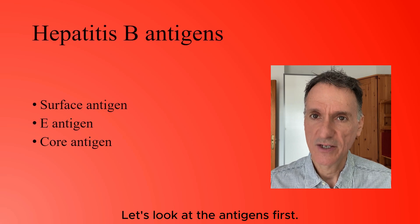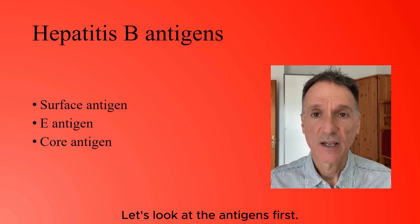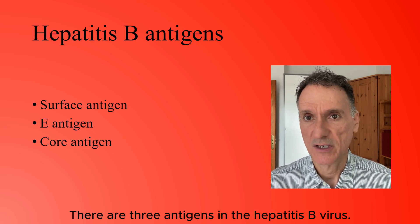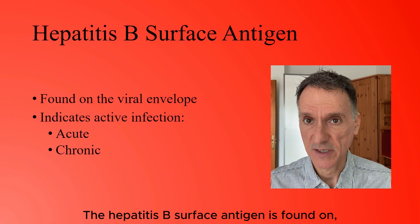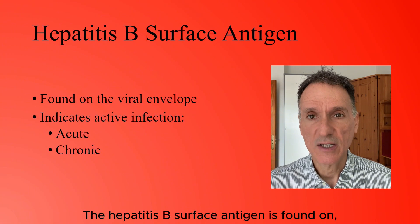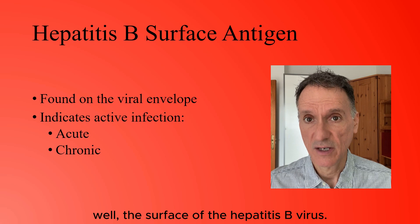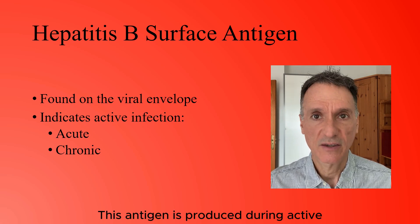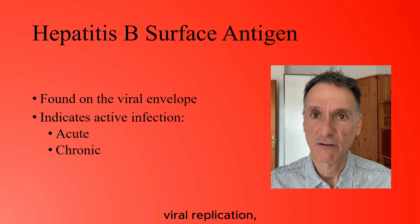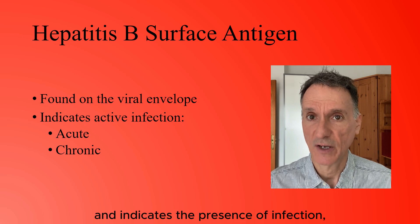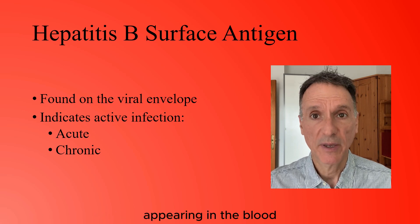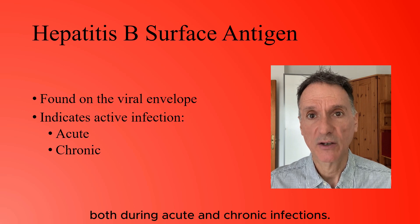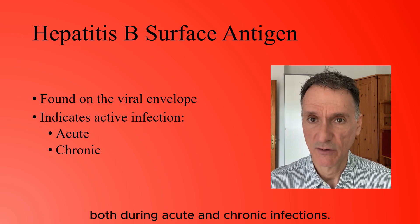Let's look at the antigens first. There are three antigens in the hepatitis B virus. The hepatitis B surface antigen is found on the surface of the hepatitis B virus. This antigen is produced during active viral replication and indicates the presence of infection, appearing in the blood both during acute and chronic infections.